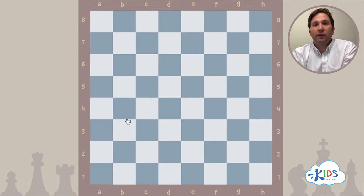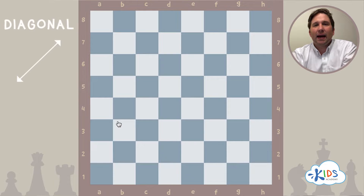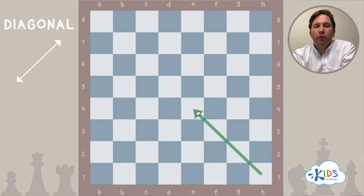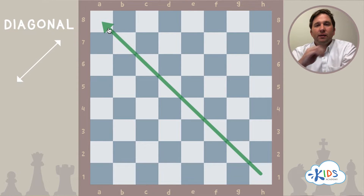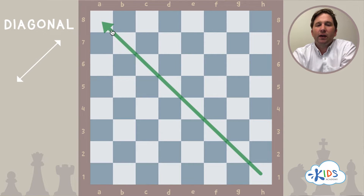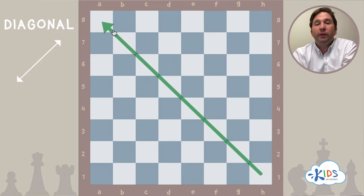The last word that every chess player needs to know about is diagonal. Bishops move diagonally, queens can move diagonally, pawns capture diagonally, and diagonally means through the corner or on the slant. Here I'm moving diagonally with my arm. If you play checkers you already know what the word diagonal is because all the checkers pieces can move diagonally — in fact it's the only way they can move.